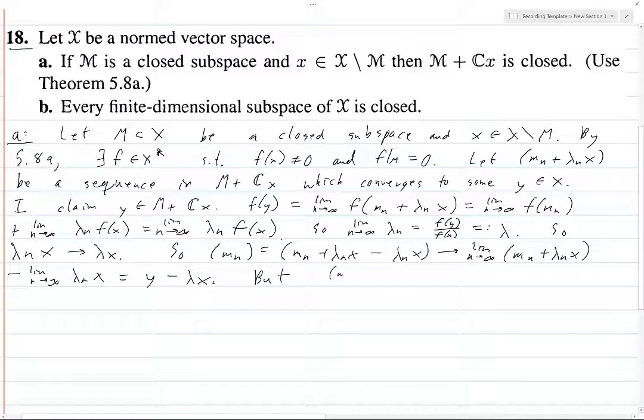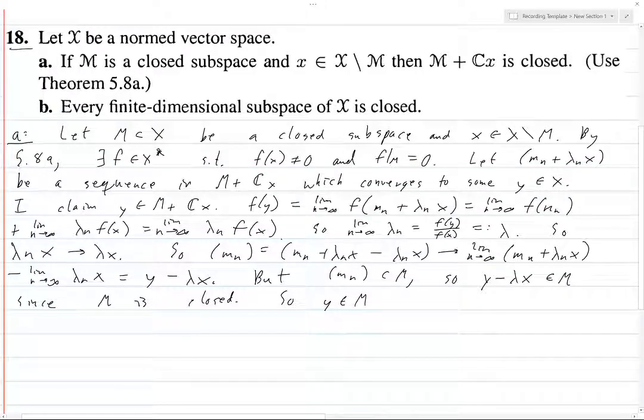Okay, so the limit of this is by definition y, and the limit of λ_N x from the above here is y minus λx. But M_N is contained in M, so y minus λx is in M since M is closed. It's the limit of a sequence in M. So what does that tell us? So y is in M. If y minus λx is in M, then y must belong to M plus CX. So hence M plus CX is closed.